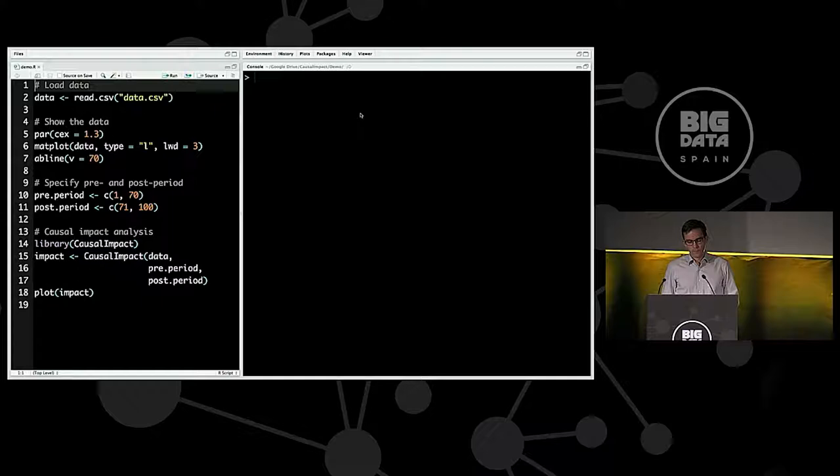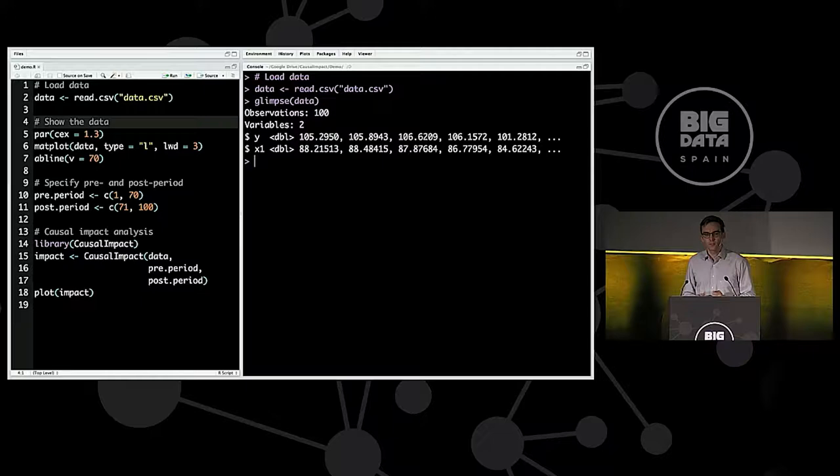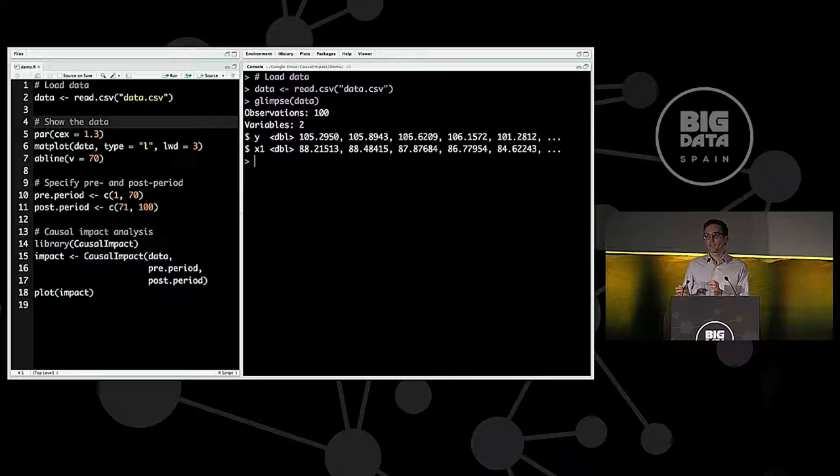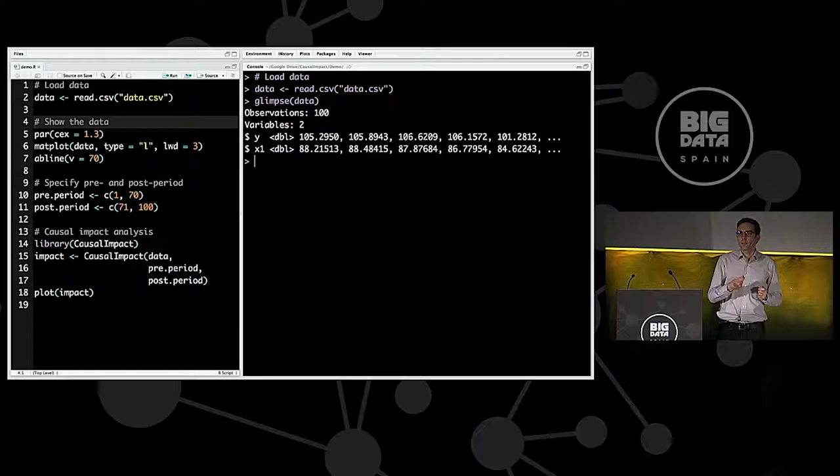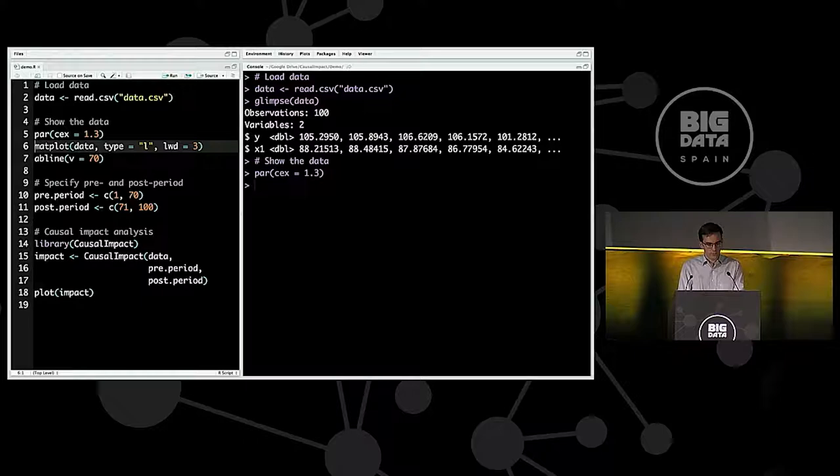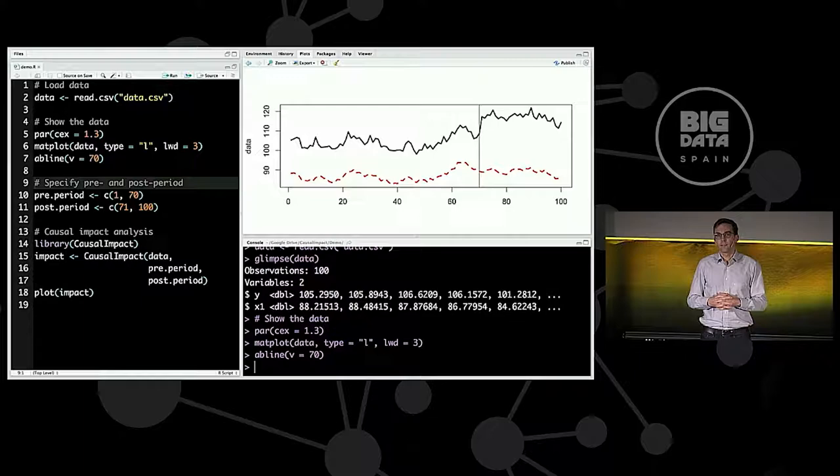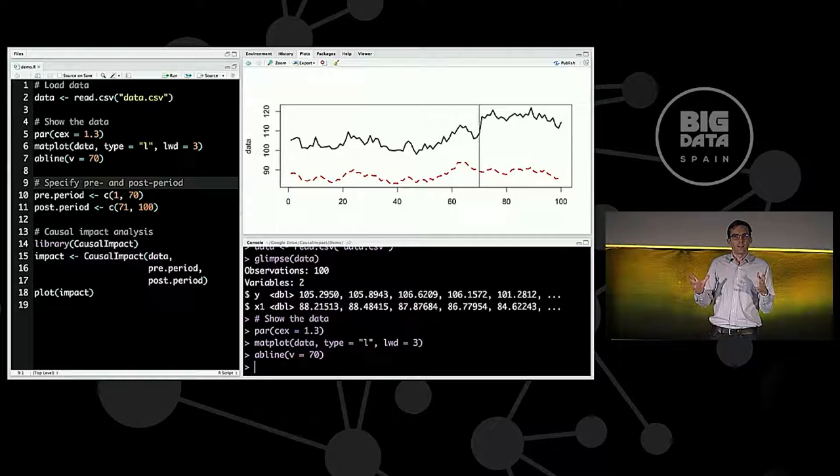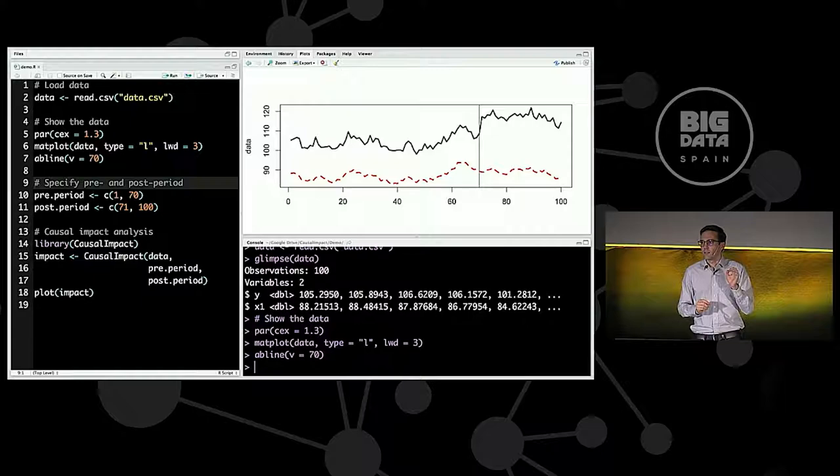Okay, so in this case, I'm looking at RStudio here and I've prepared a little toy data set which I'm just going to load into my R session. So this is a data set of 100 observations with an outcome variable called y and a single predictor time series called x1. In practice, you would typically have a handful or perhaps even dozens of these predictor variables. And the tool uses a spike and slab prior to automatically find out which of these predictors are useful. Let's take a quick look at these data. So this is what the data looks like. The black solid line here is the actual observed data over time and the red dotted line is our predictor variable.